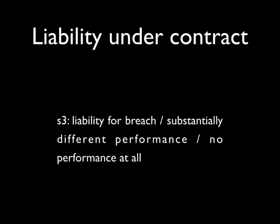Where a party to a contract deals as a consumer or on the other party's written standard terms, the other party cannot, by reference to any contract term, exclude or restrict liability in respect of the breach, or claim to be entitled to render a performance substantially different to that which was reasonably expected, or to render no performance at all, unless the term satisfies the requirement of reasonableness. This is in section 3 of UCTA. At section 4, a person dealing as a consumer cannot be made to indemnify another person in respect of liability which that other person might incur for negligence or breach of contract, except where such a term satisfies the requirement of reasonableness. This prevents a dominant party from flipping around the impact of a breach requiring the consumer to pay, although it only prevents clauses which provide for recovery on an indemnity basis.